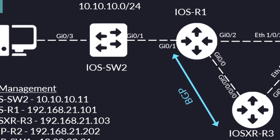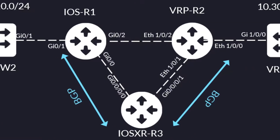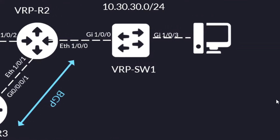On the left, we have two routers and one Cisco switch. One of the Cisco routers uses the Cisco IOS XR operating system and the other devices use Cisco IOS. On the right, we have one Huawei router and a Huawei switch, both with the VRP operating system.